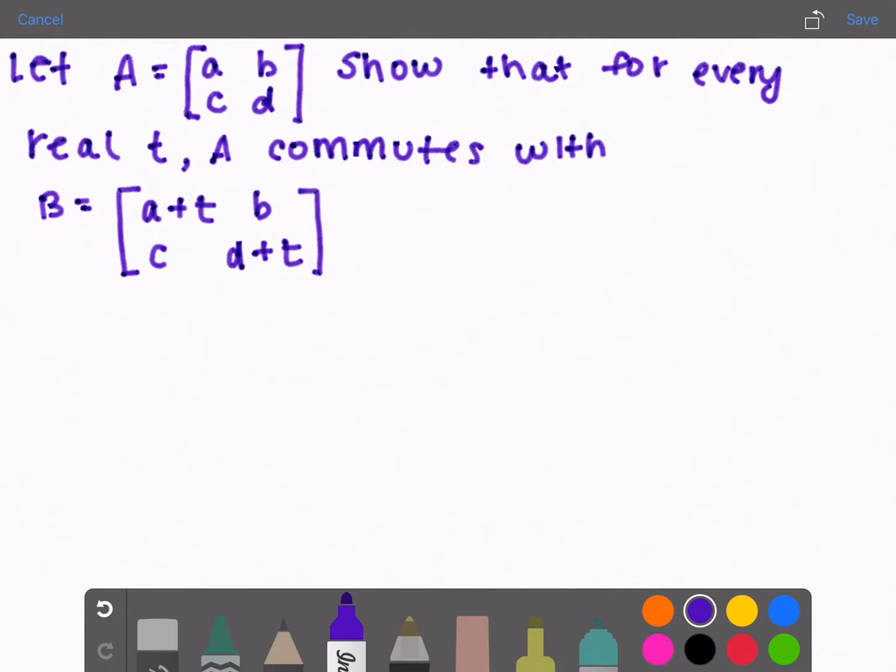Let A be the matrix with entries a, b, c, d and show that for every real value for t, A commutes with B if B equals the matrix a plus t, b, c, d plus t.